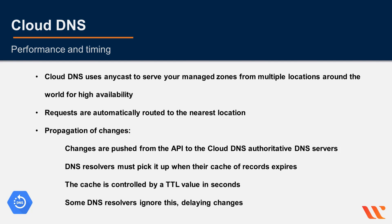Cloud DNS uses anycast to serve your managed zones from multiple locations around the world. Requests are automatically routed to the nearest location, reducing latency and improving authoritative name lookup performance. Changes are pushed from the API to the Cloud DNS authoritative servers, then DNS resolvers must pick them up when their cache of records expires. The cache is controlled by the TTL value, though some DNS resolvers will ignore this, causing further delays.